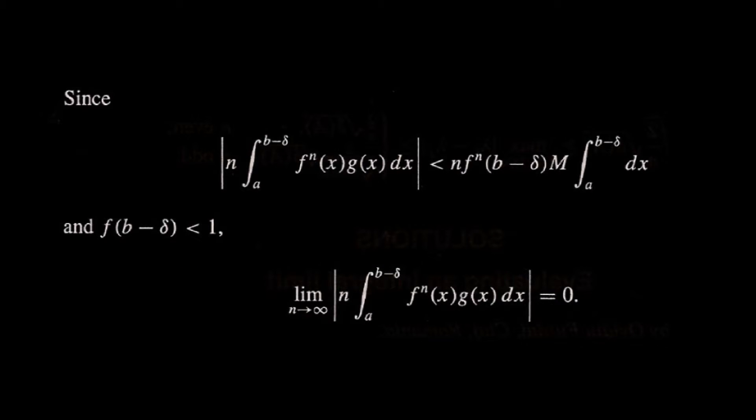The key observation is that this limit really depends on the definite integral around b. The following inequality is a consequence of f being an increasing function. And since the values of f are less than 1, the exponential decay beats the polynomial growth, making this integral approach 0.